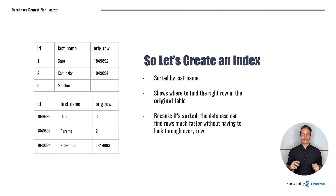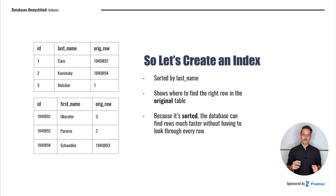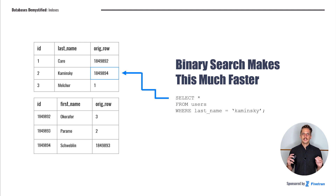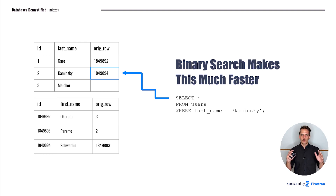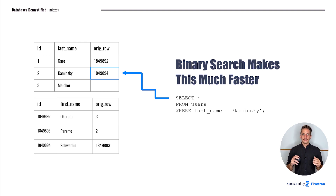So let's look at what an index on last name would look like. What we're doing is creating another table that's sorted so we can look up the location of the row in the original table by last name. Because this new lookup table is sorted, we can take advantage of binary search to make the lookup process much faster. So now when we filter on last name, the database uses the sorted index to identify the Kaminsky row much faster. For example, if we start at row 3 and see Melchor, we know Kaminsky must be before that. We bounce up to the first row and see Krow, and we know it's after that. So we zero right in on the Kaminsky row, then look up the rest of the information — first name, ID, etc. — from the original table.